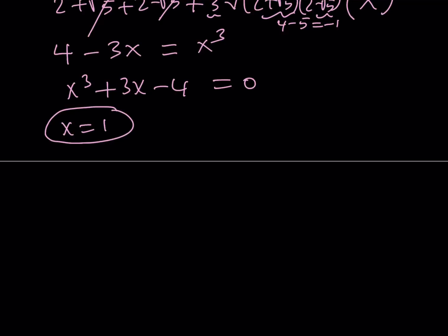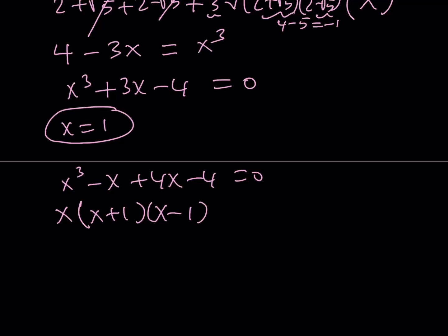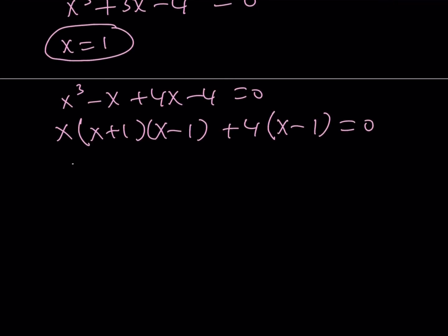After figuring out that x equals 1, we can either use long division or we can just factor it. The way I'm going to approach this is to write it as x³ minus x plus 4x minus 4 equals 0. From here, I can take out an x and get x plus 1, x minus 1 from difference of two squares, and then plus 4 times the quantity (x minus 1). So now x minus 1 is a common factor, and the other factor is going to be x² + x + 4 = 0.